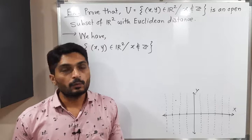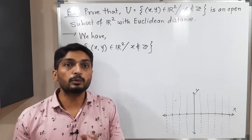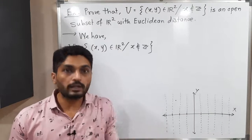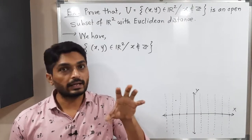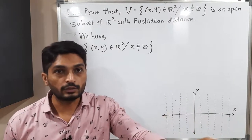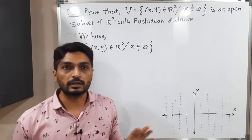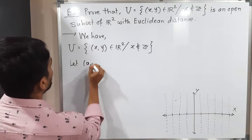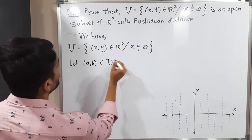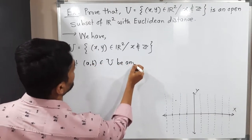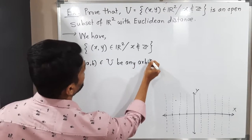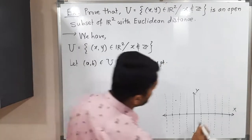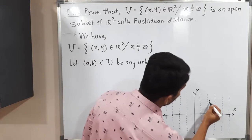We have a simple technique to prove a set is open: we take any arbitrary point, find a ball around it such that the ball entirely lies inside set U, and then we declare U is open. Let us follow the same technique. Let (a, b) belong to U be any arbitrary point.